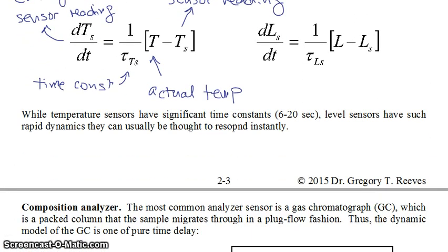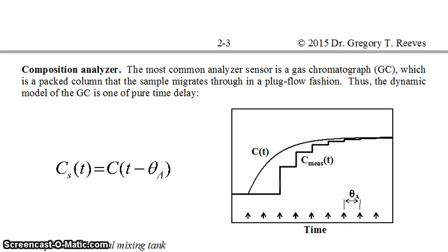Another common process variable measured by sensors is concentration, using a composition analyzer. Many composition analyzers are gas chromatographs (GCs) — packed columns of a certain length. When a sample is injected into the column, it takes time to migrate through in a plug flow fashion, and that time delay is how you model the composition analyzer dynamics.